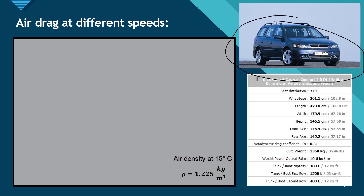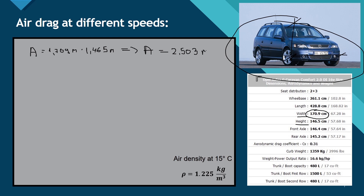First we need to calculate the frontal area of this car. The frontal area A equals the width times the height. The width is 1.709 meters and the height is 1.465 meters, so A = 1.709 × 1.465 = 2.503 m².